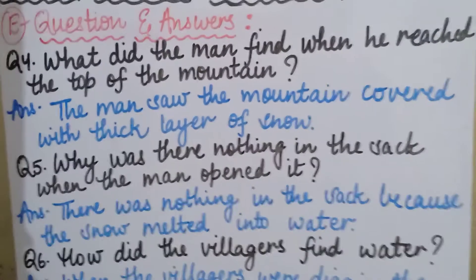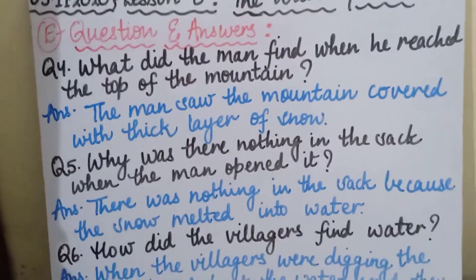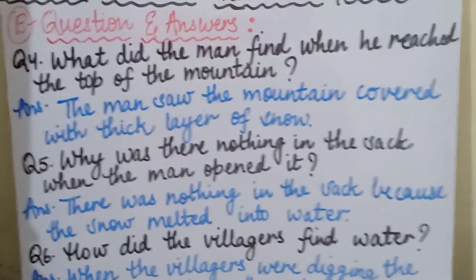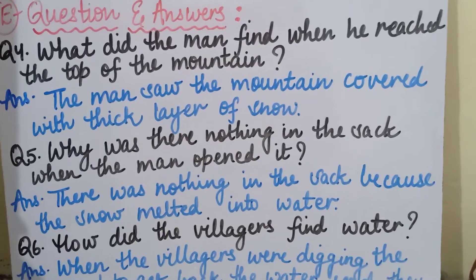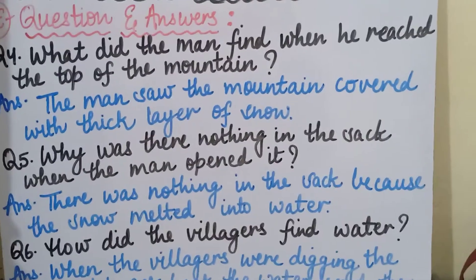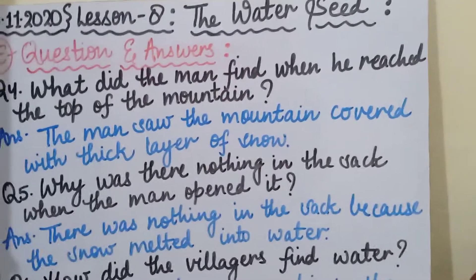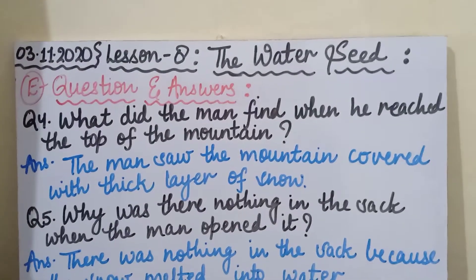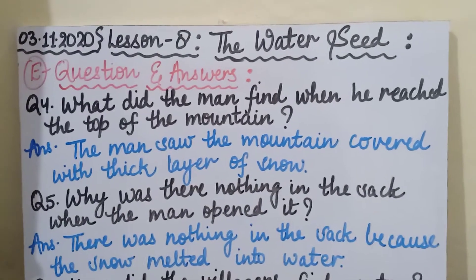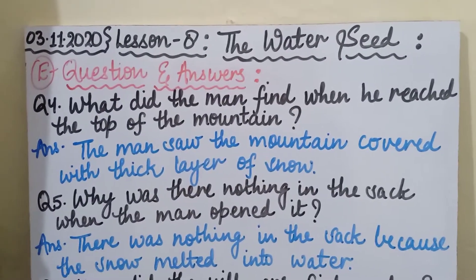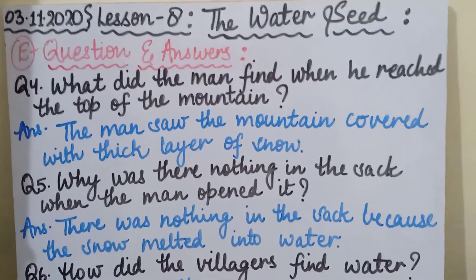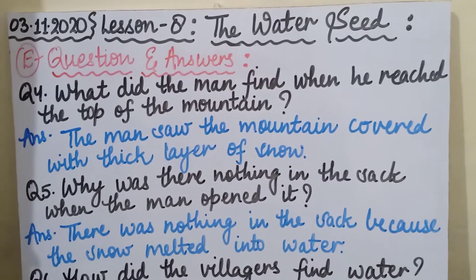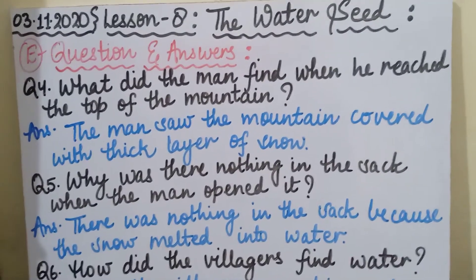That is all for today, children. I hope you all have understood all six question answers. Tomorrow we will be doing make sentences. Please make sure that today's work is completed by today itself. You can come for copies correction from tomorrow. Copies correction time is from 10 a.m. to 1 p.m. Make sure you complete all your work on time. Bye-bye, children. Take care. Stay at home and stay safe.